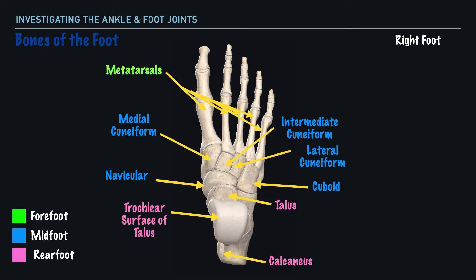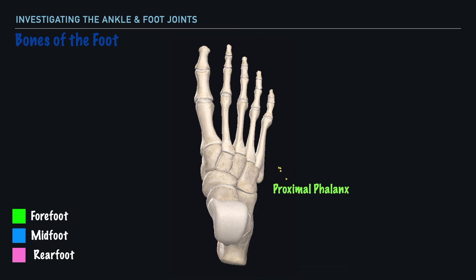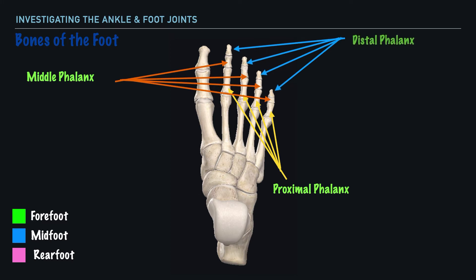Moving to the forefoot, we have our metatarsals, and our metatarsals are numbered 1 through 5, beginning with the medial aspect. So we have metatarsals 1, 2, 3, 4, and 5. Now starting with the great toe, we have what's called the proximal phalanx, and following this we have the distal phalanx. When we move on to toes 2 through 5, we have proximal, middle, and distal phalanxes.